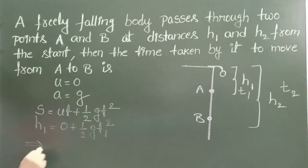So from this, the first term is 0. We want the time, so T1 equals square root of 2H1 by g.